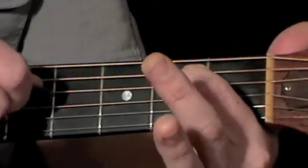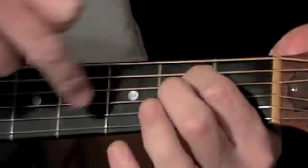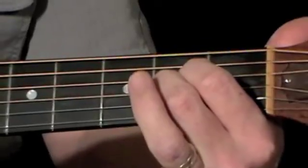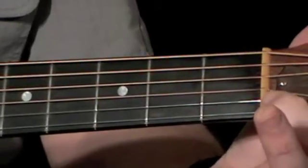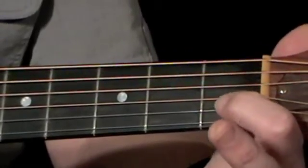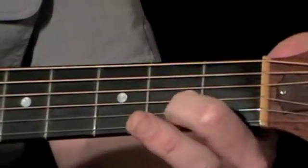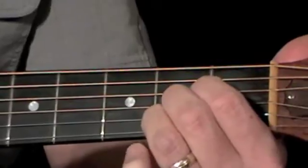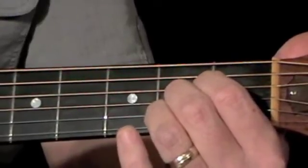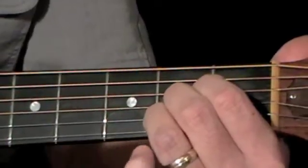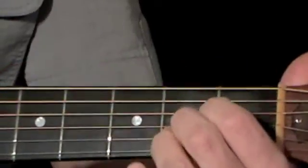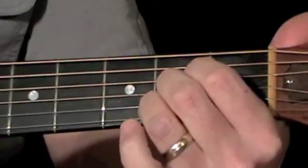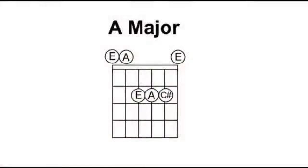Then I look at the next string: G. Is that in the triad? No. So G sharp, A — I move that finger there because A is one of the three notes we want. Then I play the next string: B, which isn't in our triad. Nor is C. But C sharp is, so I'll put that finger there. Then I play the top string — that's an E, which again is in our triad. So that's how I've created my A shape. Sounds like an A chord, and I expect we're all familiar with that particular fingering — but this time we worked it out from basic principles.